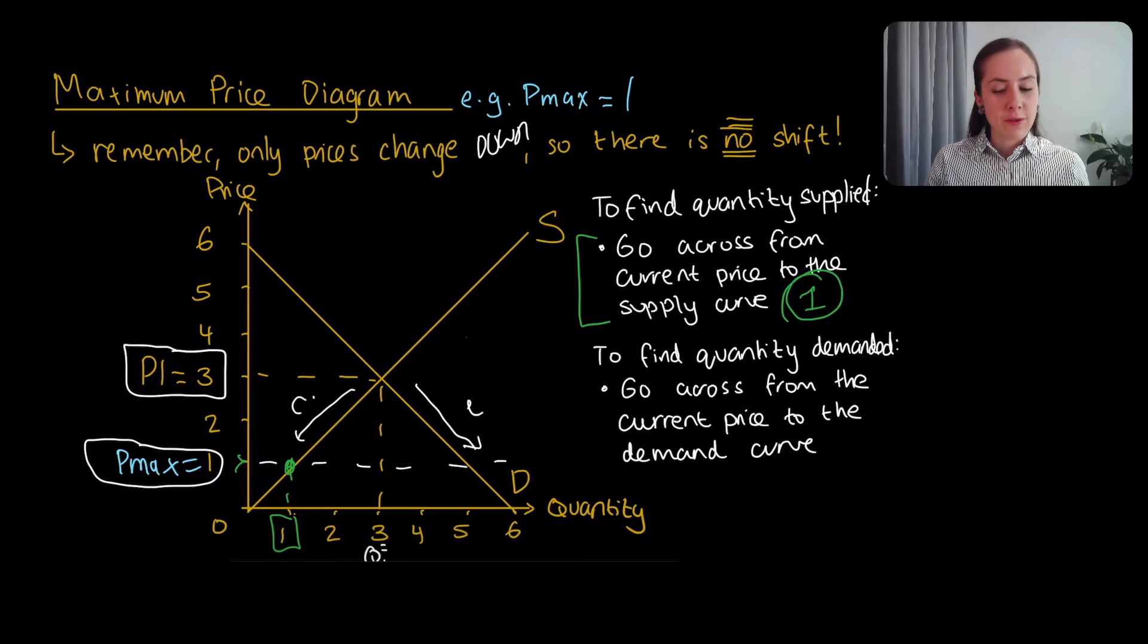And then you do the same for the demand. You go across from the current price to the demand curve. So go across from Pmax and find the demand curve. That would be there. And this is the quantity that consumers want. And they want to buy a lot of this good because it's really cheap and they think it's worthwhile to buy. But firms at the same time, they're thinking, I don't really want to supply it because it's a lot of costs and I can't really make a profit on it.